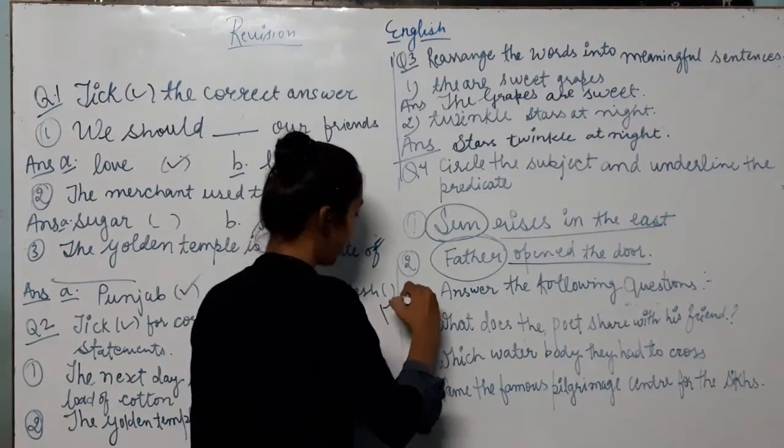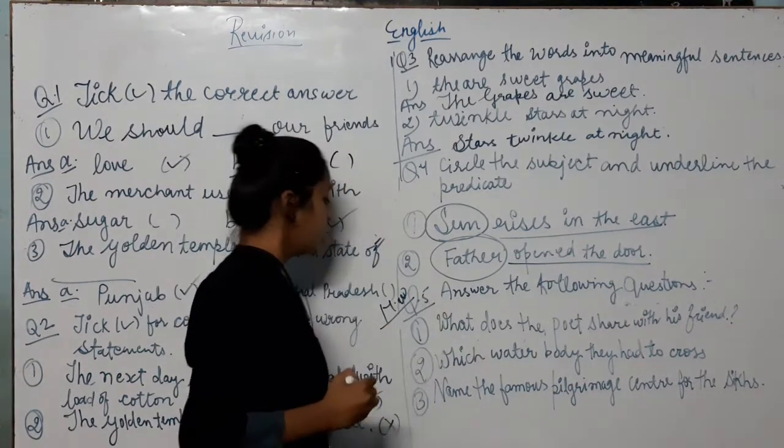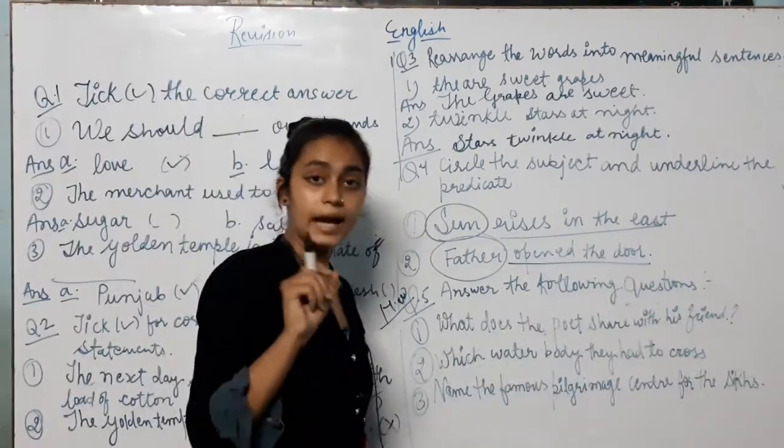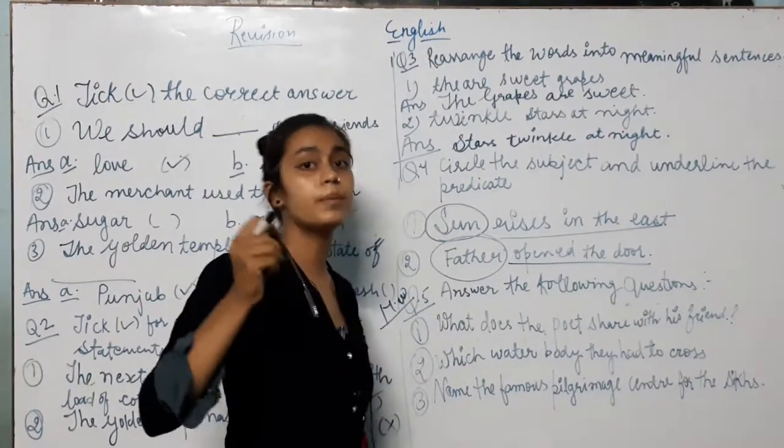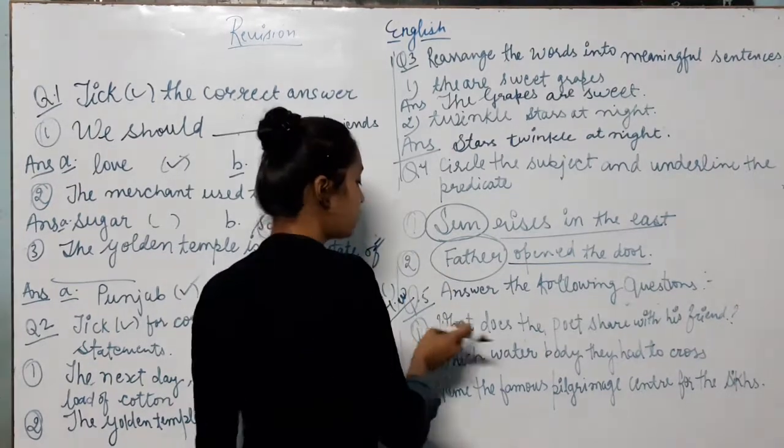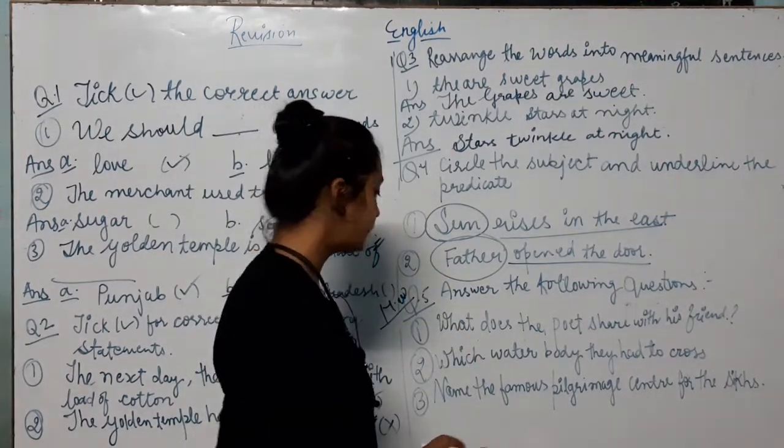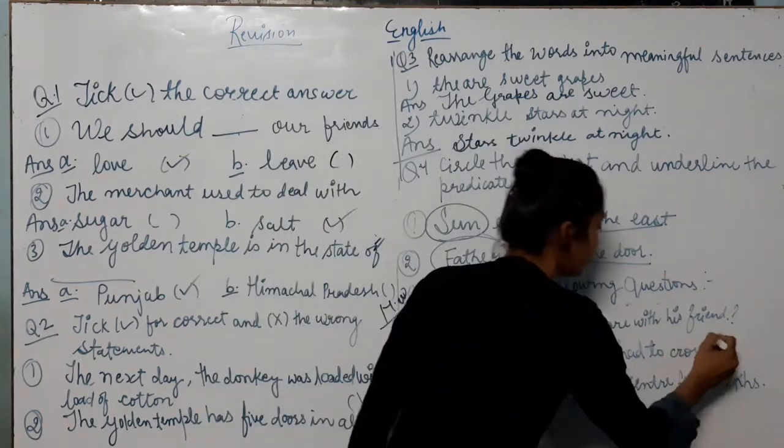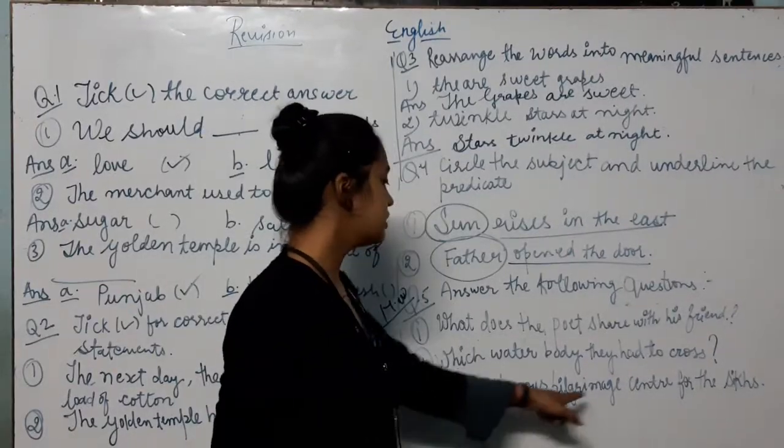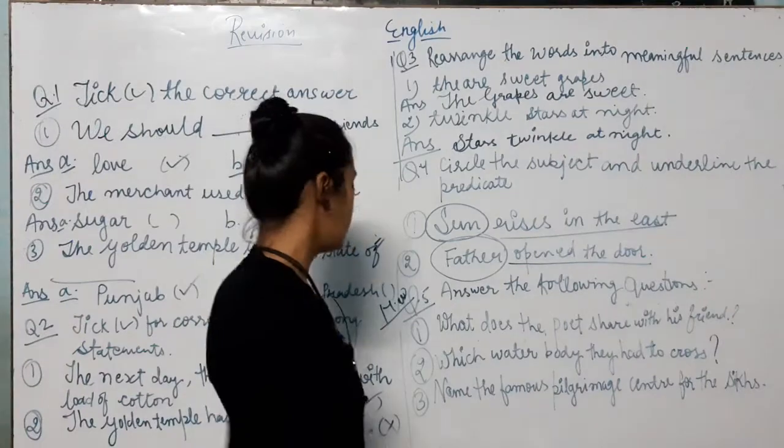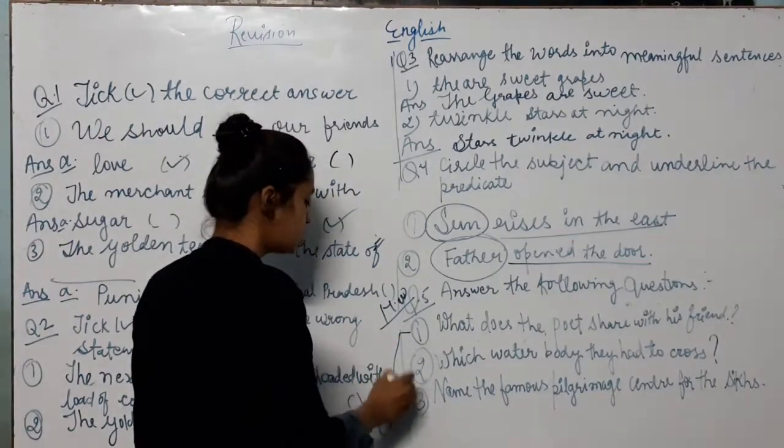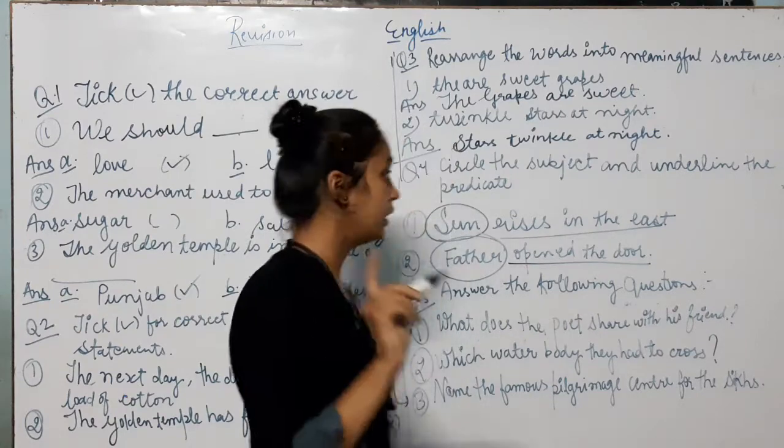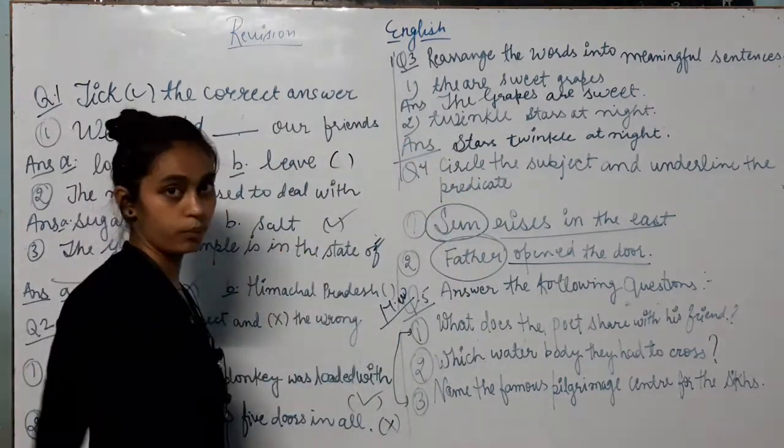Now this is a question number five. It should be done by yourself. Write the question and do answer by yourself. First one is what does the poet share with his friend? Second one is which water body they had to cross? Name the famous pilgrimage center for the Sikhs. This is unsolved. You have to solve by yourself in English copy.